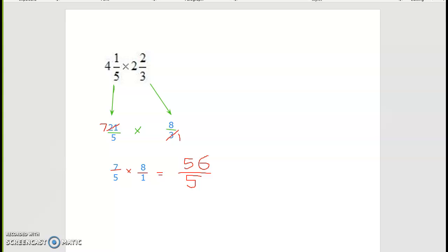And then you'll see that you get 56 fifths. If, when you multiply it, the final step you'll just need to is convert that and then make sure it is in simplest form.